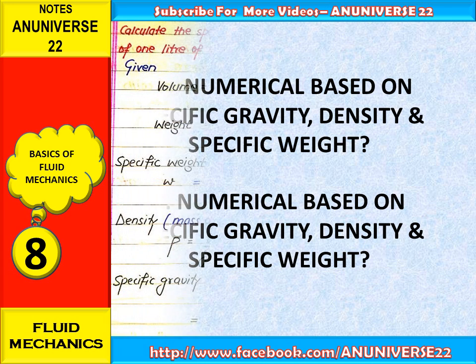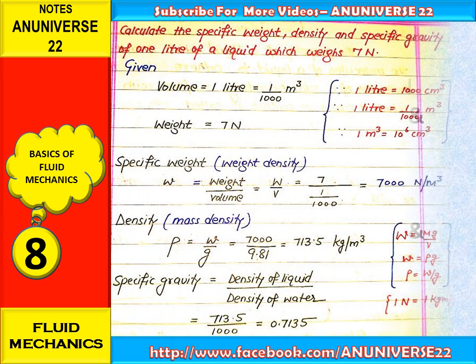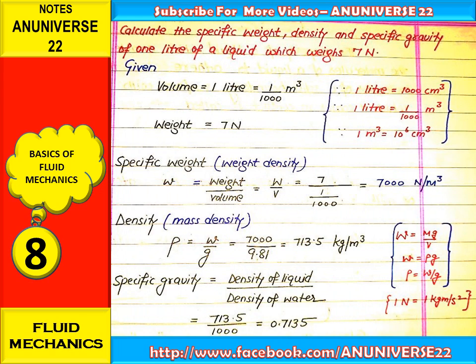Let us start with the first numerical: calculate the specific weight, density and specific gravity of 1 liter of liquid which weighs 7 N.